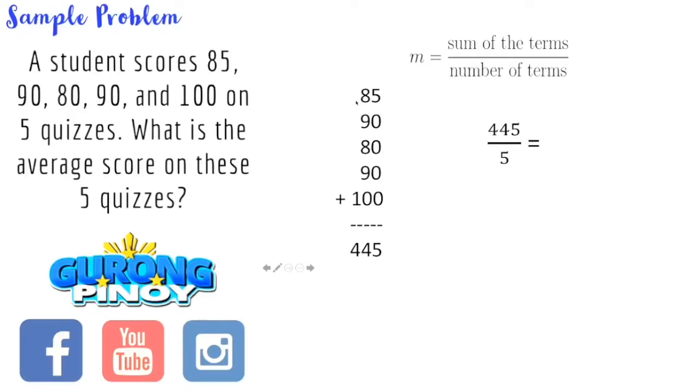Why 5? Because we have 5 scores. So we divide the sum of 445 by the number of terms, which is 5. By looking at the numbers, we know that we cannot divide 4 by 5. So we include the second digit, that's 44 divided by 5, and we know that to be 8. So 44 divided by 5 is 8, and we have a remainder of 4. So the next number that we should divide by 5 is 45. So that's 45 divided by 5, and that gives us 9. So the correct answer would be 89.